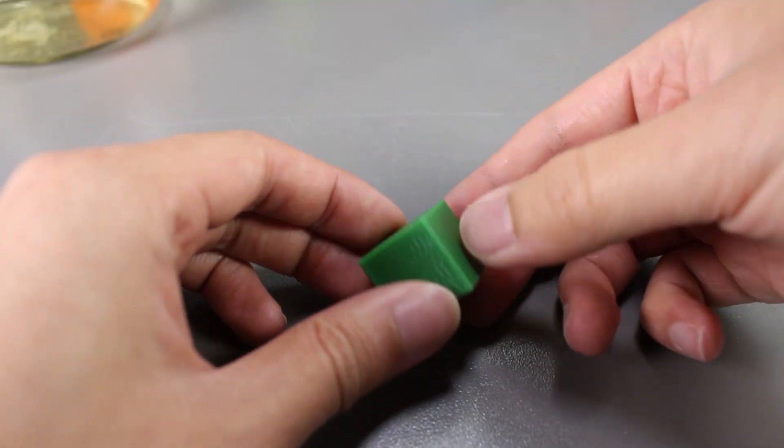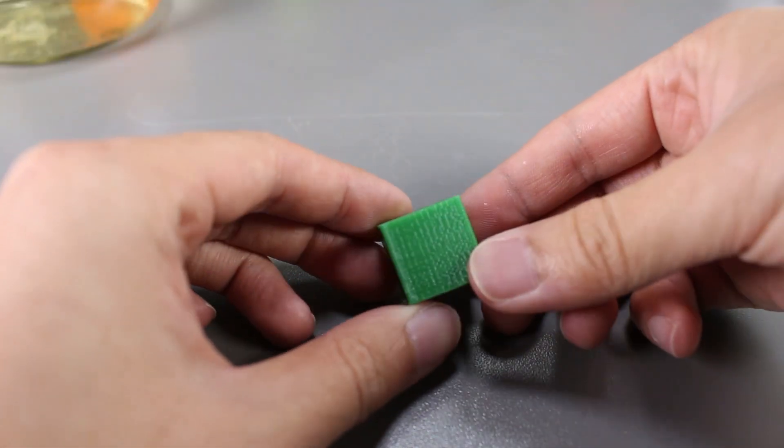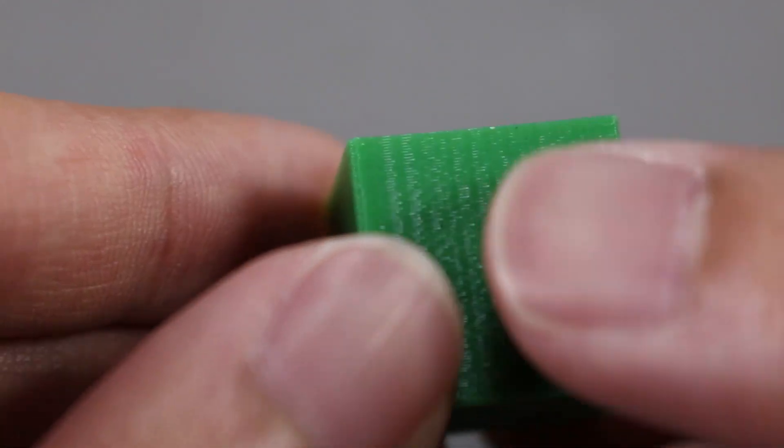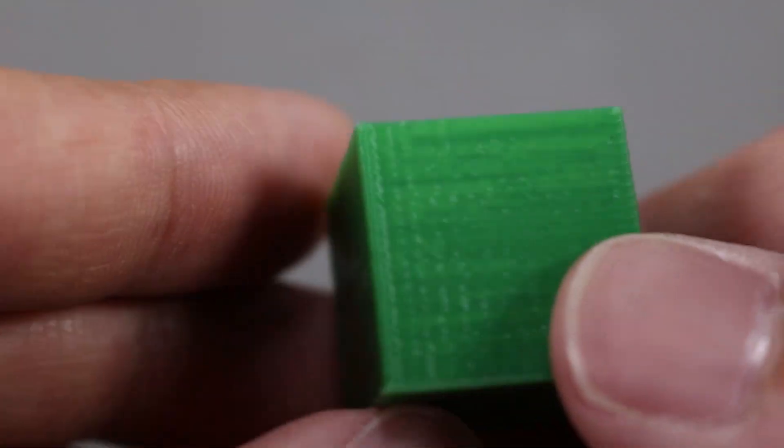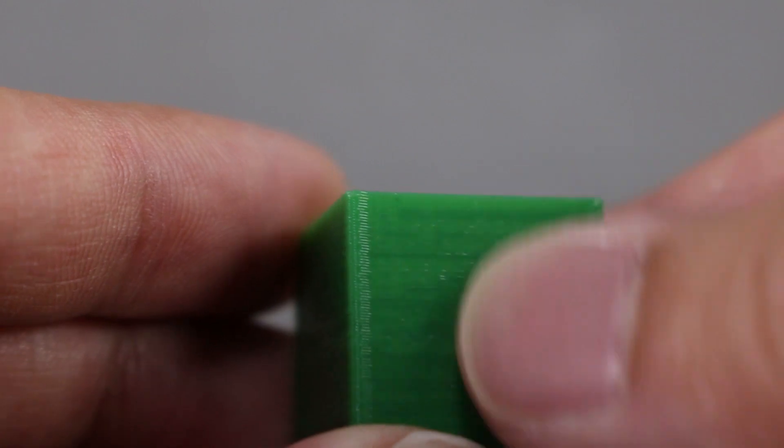It seems like the bleach didn't do anything to the cube at all despite leaving it in for a longer period of time. The sides don't feel smoother after exposing it to bleach either.